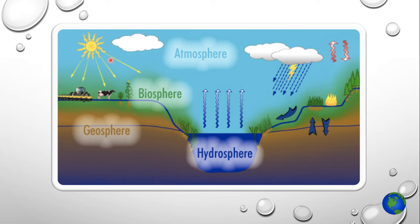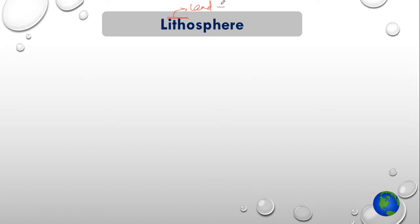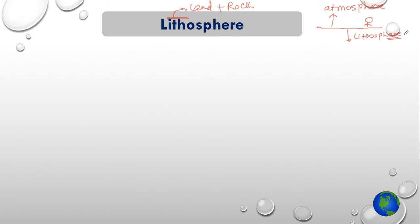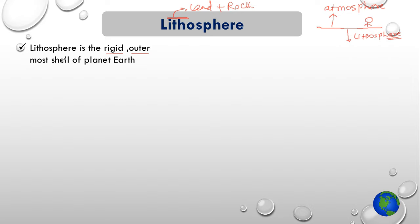This is a simple picture depicting all four spheres: atmosphere, biosphere, geosphere which is your lithosphere, and hydrosphere. Lithosphere, as the name suggests, is all about land and rocks. If this is the land where you are standing, moving above the earth's surface you will find your atmosphere, and if you move hundreds of kilometers beneath the earth's surface you will find your lithosphere. So lithosphere is basically the rigid outermost shell of the planet earth, meaning it is cold and solid.